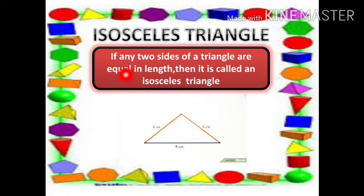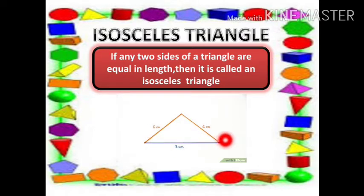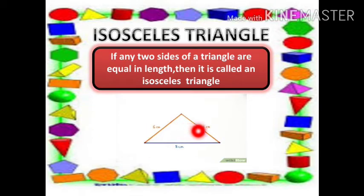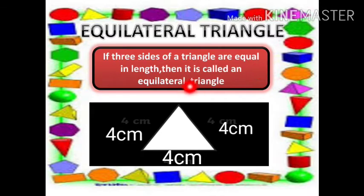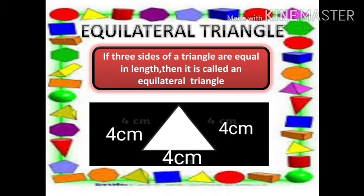Isosceles triangle: if any two sides of a triangle are equal in length, then it is called an Isosceles triangle. Equilateral triangle: if all three sides of a triangle are equal in length, it is called an Equilateral triangle. For example, here all three sides are 4 cm, so it is called an Equilateral triangle.